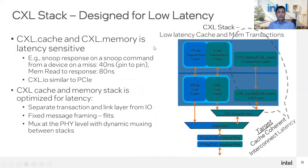CXL is designed to be latency-optimized for cache and memory accesses. The spec specifies the maximum latency for a snoop miss pin-to-pin at 50 nanoseconds for CXL.Cache traffic. Maximum latency on a memory read to data return pin-to-pin is 80 nanoseconds for HPM or DDR-type memory. If slower memory is used, a reporting mechanism indicates higher latency so system software can allocate that memory accordingly. Latency is the reason we multiplex the three protocols at the flit layer level with the split-flit mechanism inherent to CXL.Cache and Mem. CXL.IO transactions can be interrupted or suspended with high-priority cache or mem traffic at the flit boundary, which is 68 bytes.